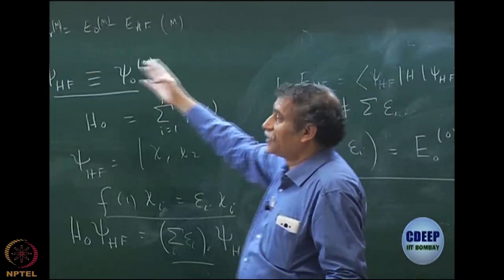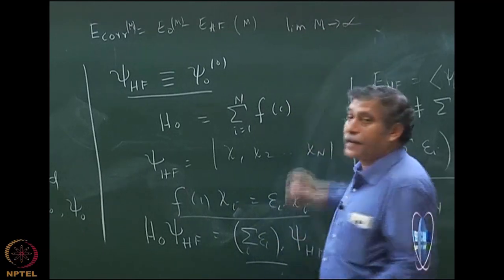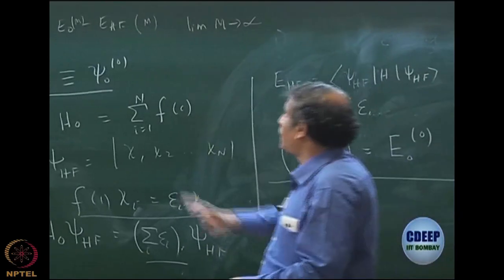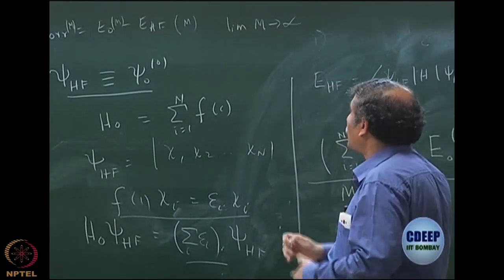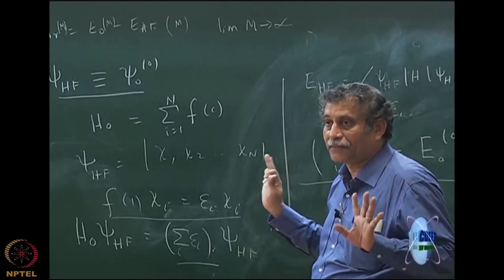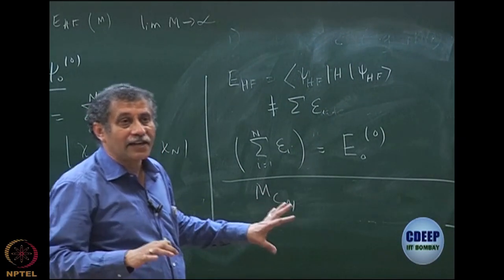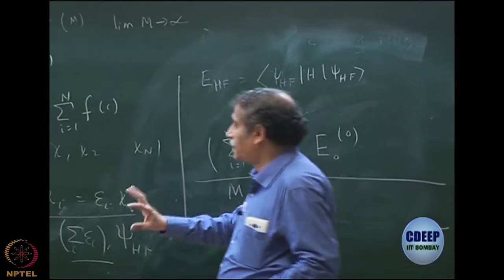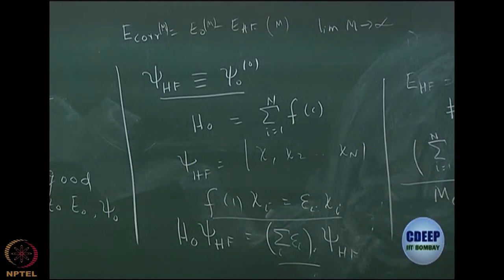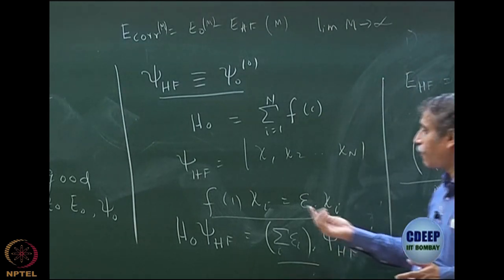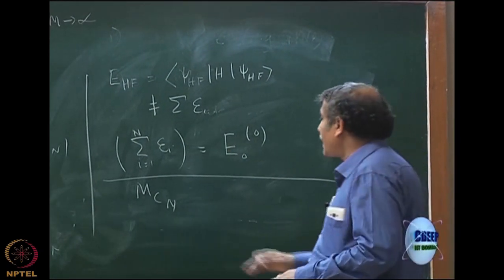Everything will change as M changes. For exact values, take the limit M → ∞, then everything becomes exact — exact energy, exact Hartree-Fock energy, exact correlation. It is important to realize that everything we have been talking about is in a finite basis. So with this finite basis, we have a finite number of solutions of H₀ — all MCN determinants — because they contain spin orbitals that are eigenfunctions of the Fock operator, and H₀ is the sum of Fock operators.